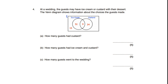At a wedding, guests may have ice cream or custard with their dessert. The Venn diagram shows information about the choices guests made. Part A — how many guests had custard: 34 people had only custard and 9 people had custard and ice cream, so 34 plus 9 equals 43. Part B — how many guests had ice cream and custard: from the Venn diagram, 9 people are in the overlap, so the answer is 9. Part C — how many guests went to the wedding: add up all values — 51 plus 9 plus 34 plus 13 equals 107 people.